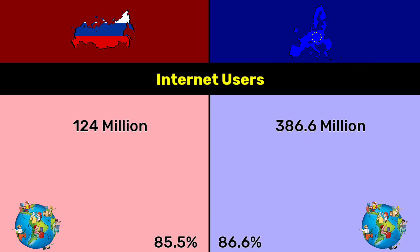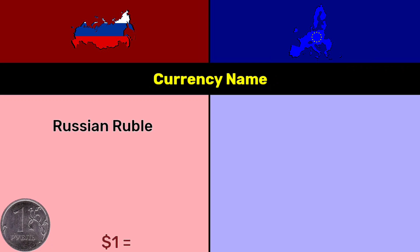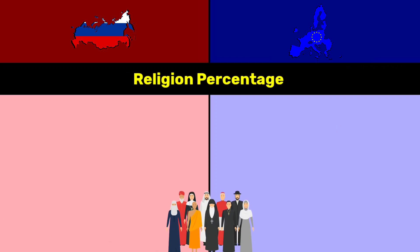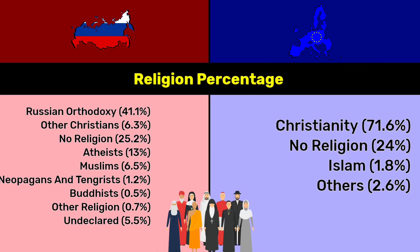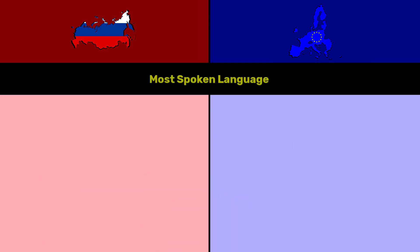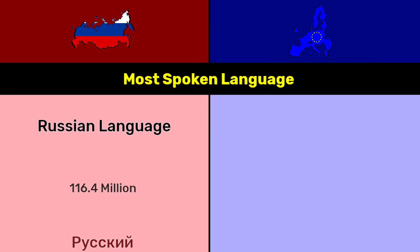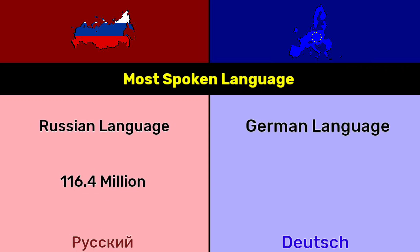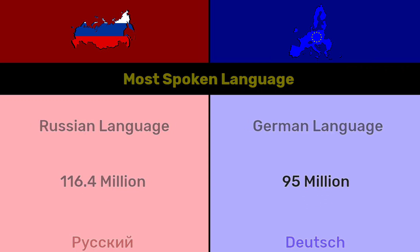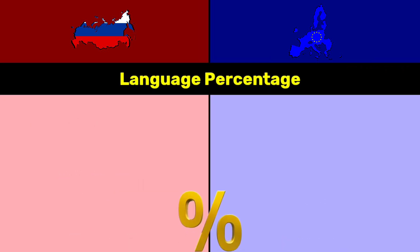Internet users cover 86.6% of the European Union population. Currency: Russia — Russian Ruble, 1 dollar equals 60.30 rubles; EU — Euro, 1 dollar equals 1 euro. Religion: Christianity dominates both regions. Most spoken language: Russian at 116.4 million speakers, German at 95 million speakers.